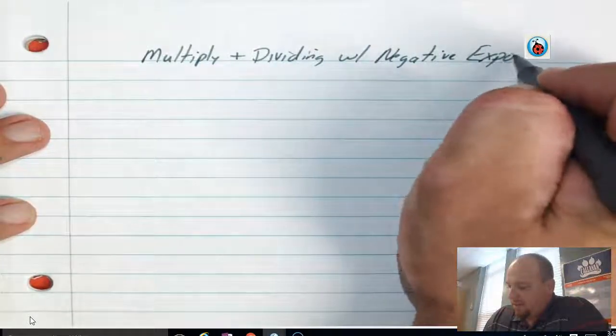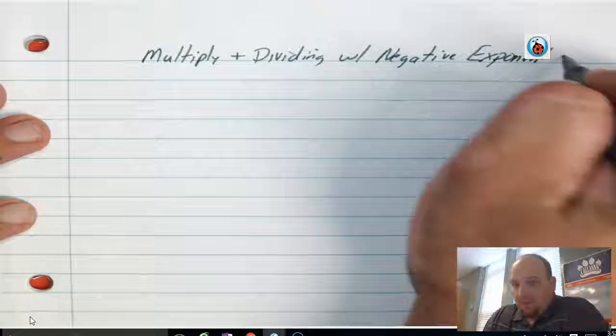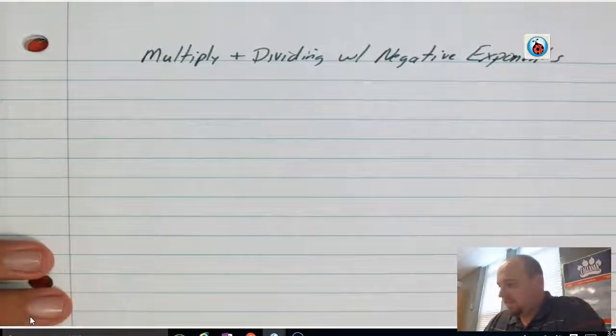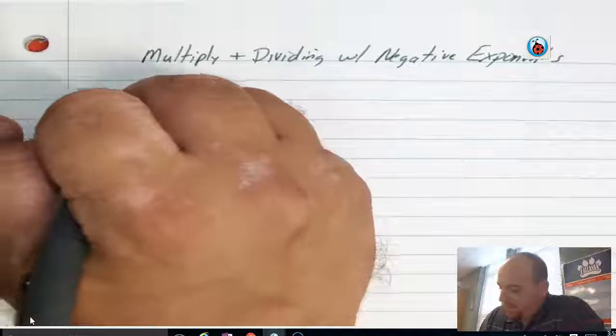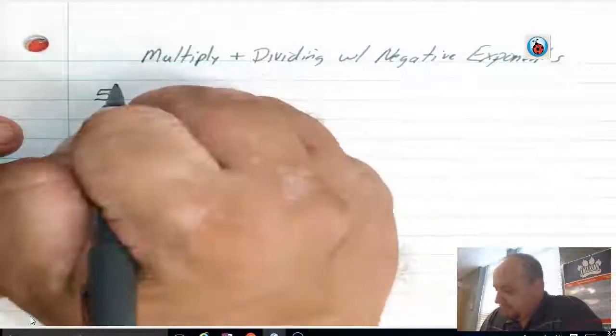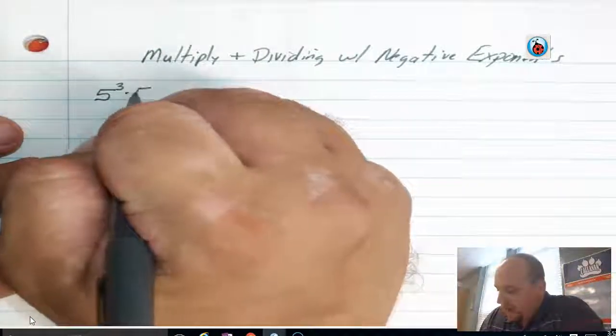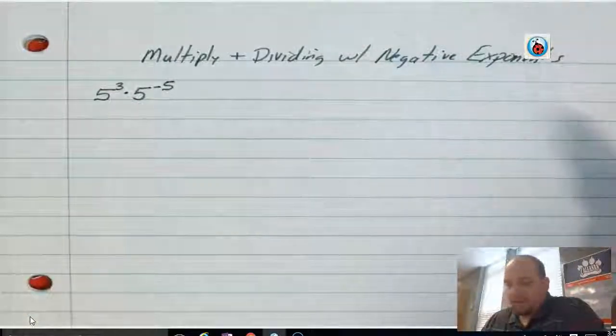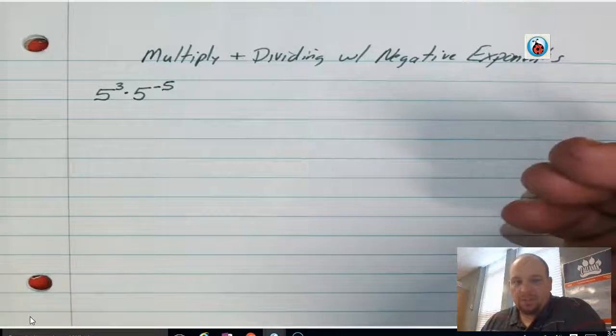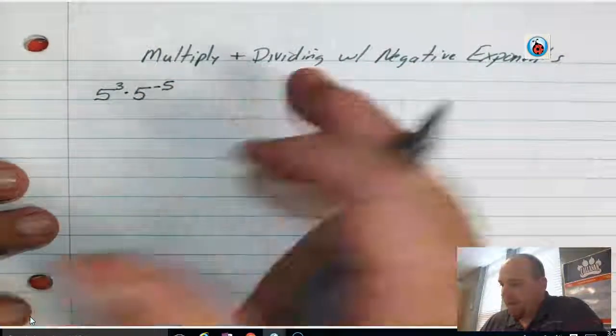So let's go ahead and look at what that exactly looks like. Okay, so we have 5 to the third times 5 to the negative fifth power. Notice, we have identical bases, so we're good. Since these both have a base of 5, we're good to go.